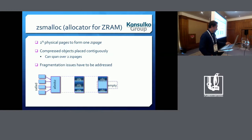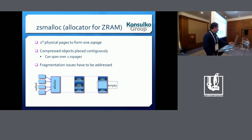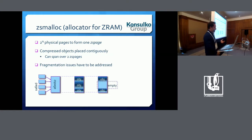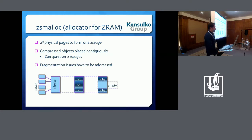Question from the audience: are these compressed objects always pages? In ZRAM and ZSWAP we are swapping out pages, so we are compressing a page into something smaller — we can assume the compressed result is less than a page in size, because otherwise we'd just store it uncompressed. So the compressed object is a compressed page, and in this context we can assume it's a size of a page or less.